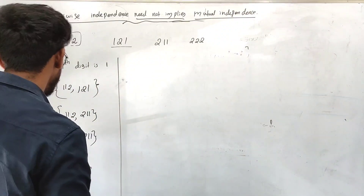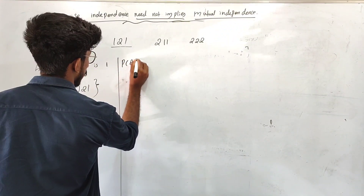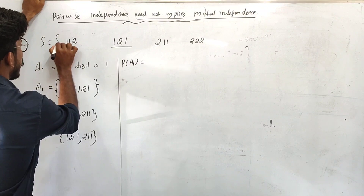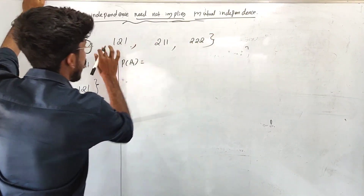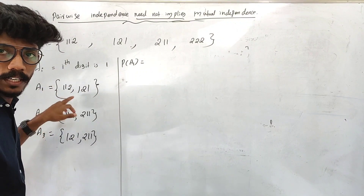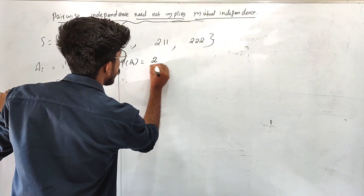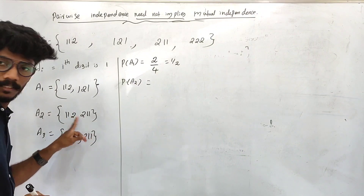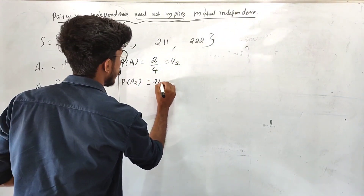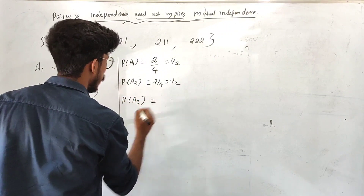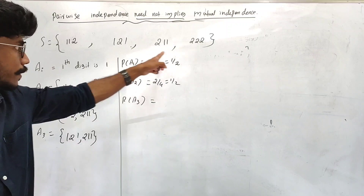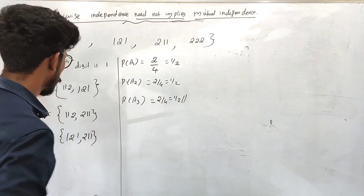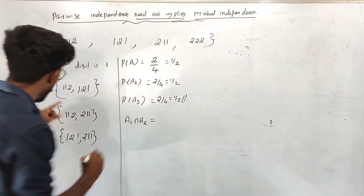Let's compute the probabilities. The probability of A1 is 2 out of 4, which equals 1/2. The probability of A2 is also 2 out of 4, which is 1/2. The probability of A3 is also 2 out of 4, giving 1/2.